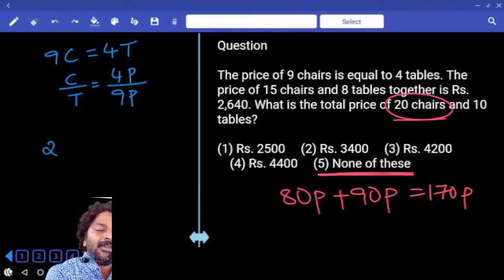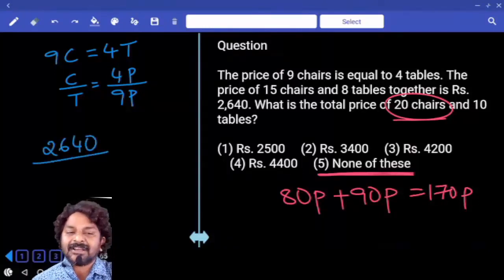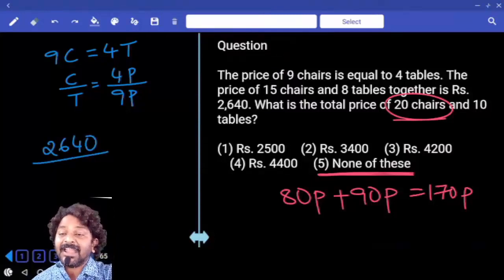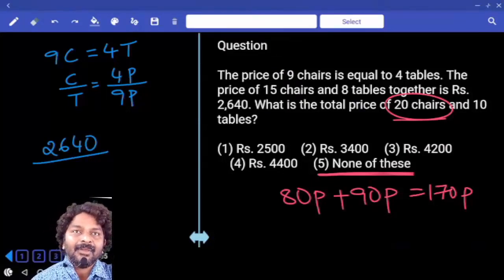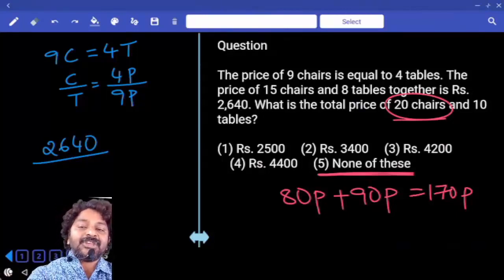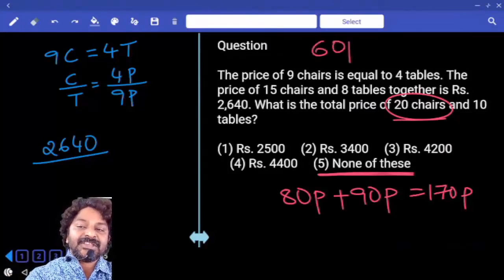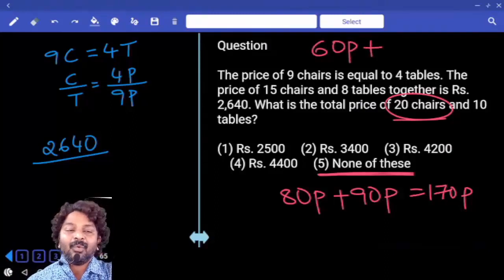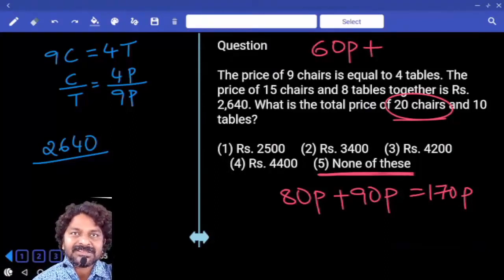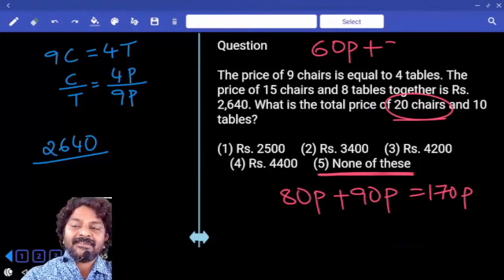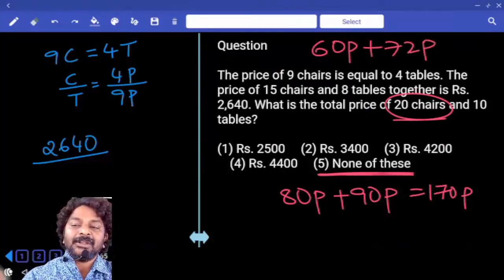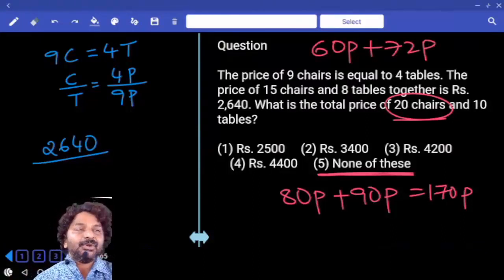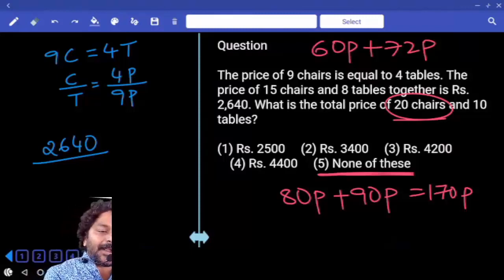Now we were given 2,640. So this is cost of 15 chairs and 8 tables, correct? 1 chair cost 4 parts. 15 chairs cost 60 parts. And 1 table cost is 9 parts. 8 tables? 72 parts. Then total? 132. 2,640 is 132 parts.